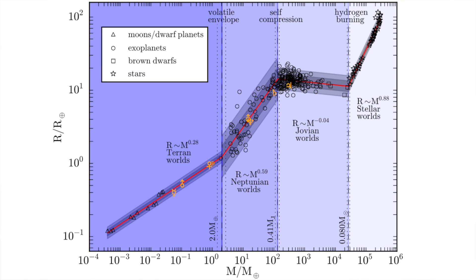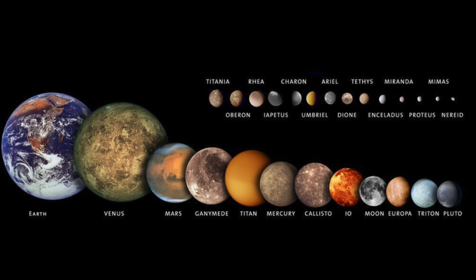The first transition happens at two Earth masses, which corresponds to about 1.23 Earth radii. We label the category below this point as the Terran worlds, because the Earth is a typical member. Many solar system worlds, including Mercury, Venus, Mars, as well as the moons and dwarf planets, all belong to this category.